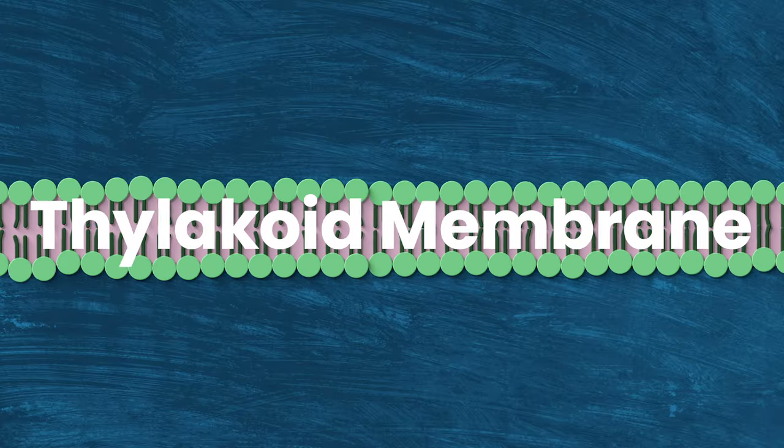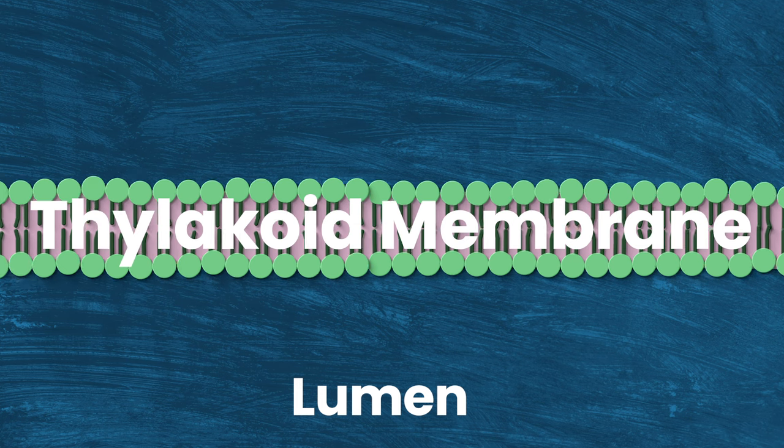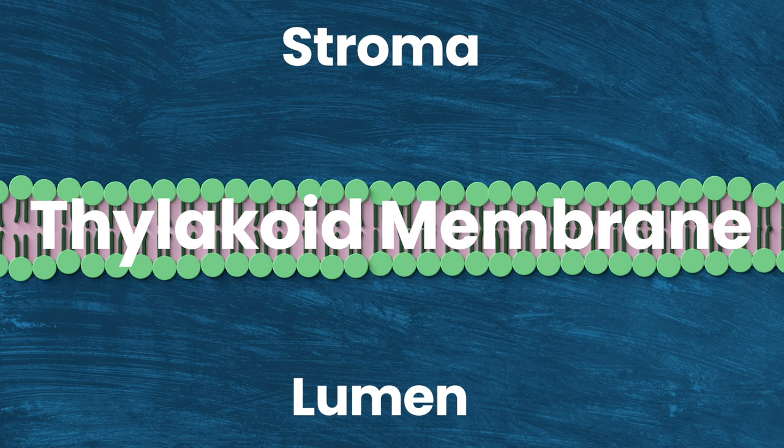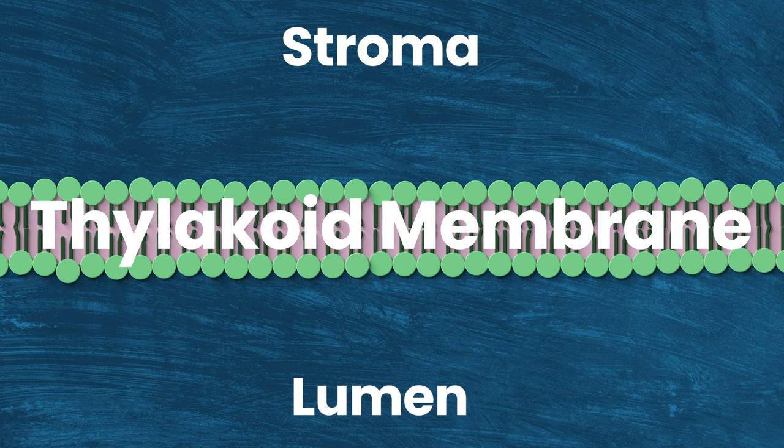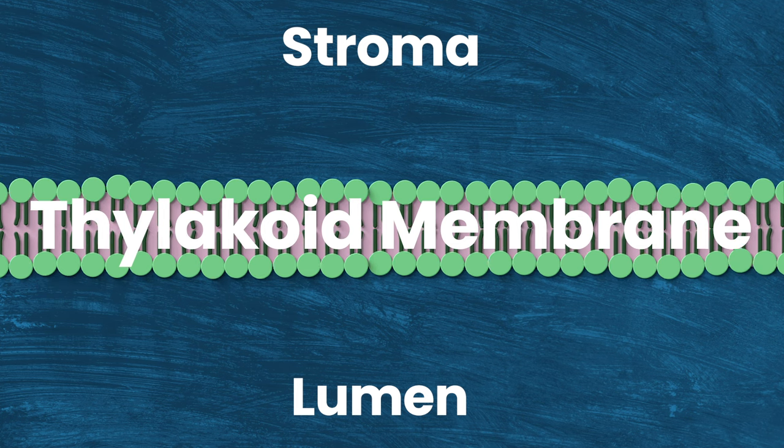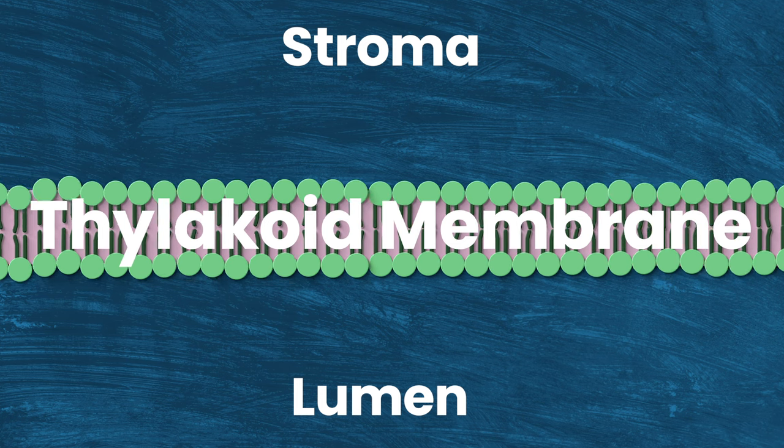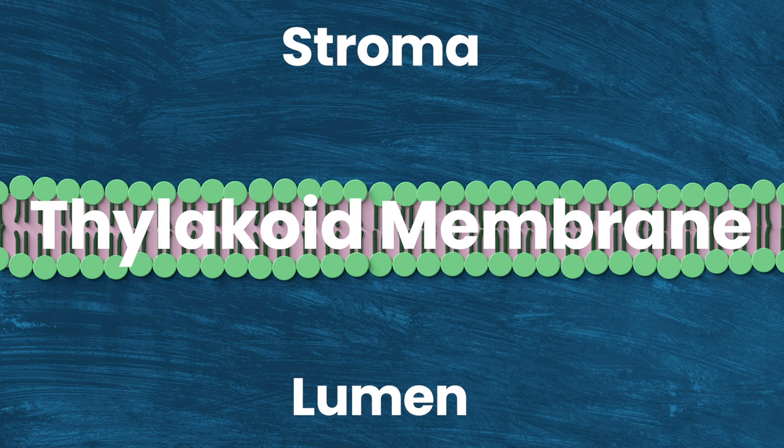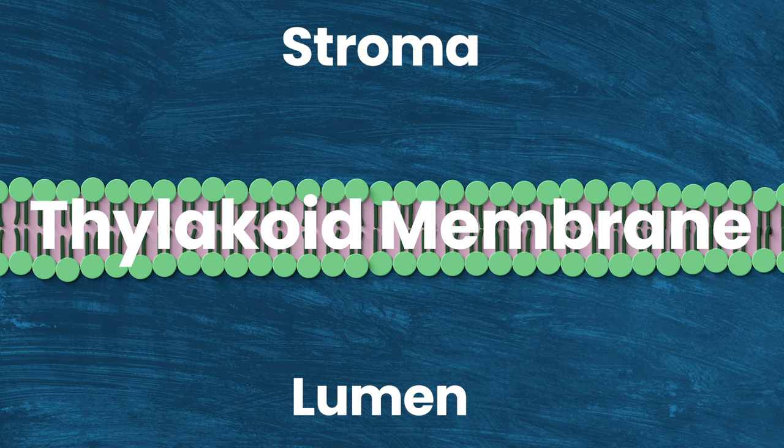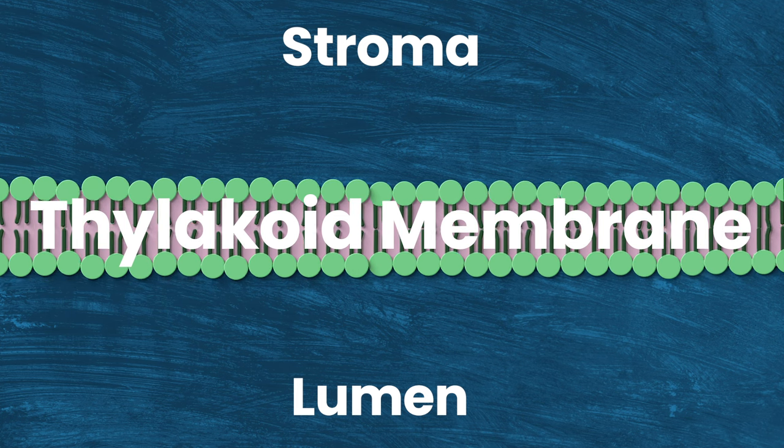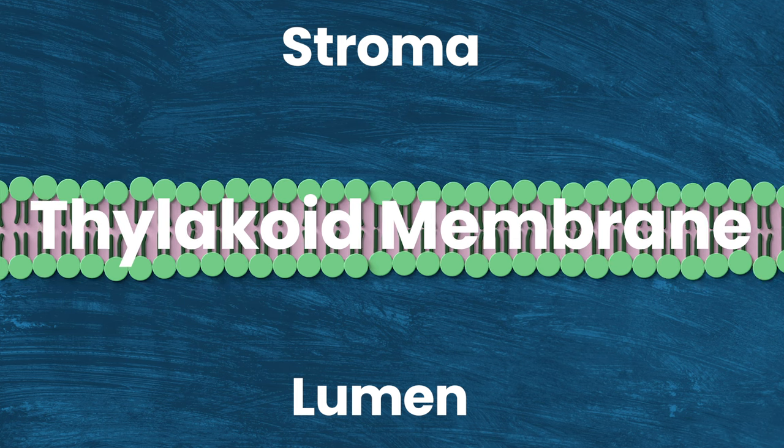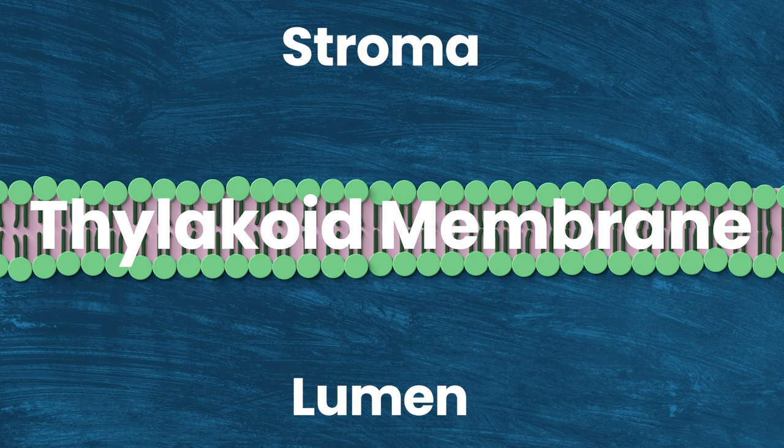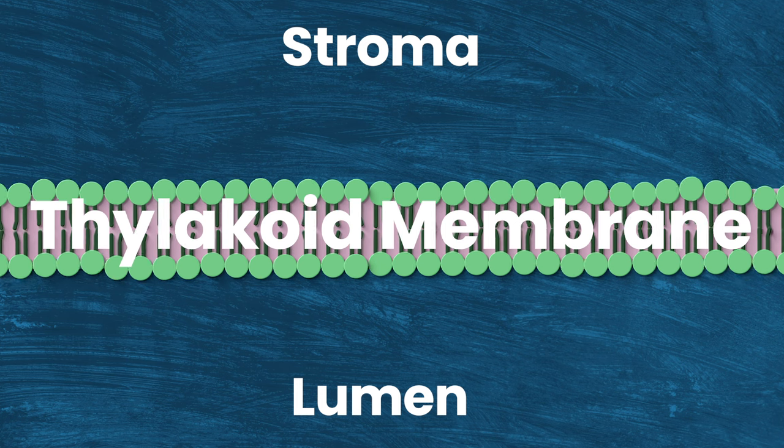The inside of the thylakoid is called the lumen, and the space outside is called the stroma. I know we're doing a lot of labeling here, but the stroma and lumen are the really important parts of photosynthesis. So if you forget every other stage of this Russian nesting doll, just remember that you've got the stroma on the outside and the lumen on the inside. In slide and out stride, I guess? I don't know. Please comment below with a better mnemonic device if you've got one.